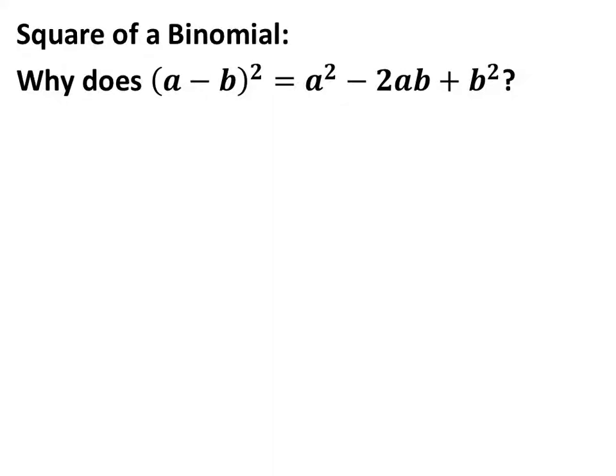Hey you guys, this is Mr. Sal. We're going to look at this binomial here, the difference of a and b. We're going to square that and see why it equals a squared minus 2ab plus b squared. This problem isn't too bad if you can FOIL, just like we did on the last problem where it was a plus b.